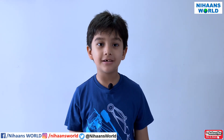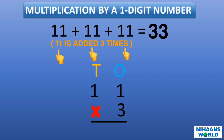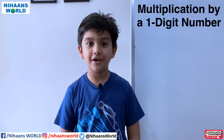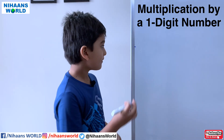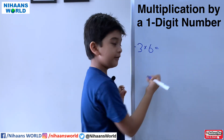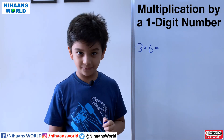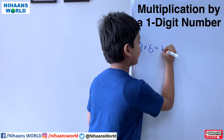Friends, now let us learn multiplication by a one-digit number. 11 is added 3 times. 1 multiplied by 3 is equal to 3, so we write 3 in the ones column. Multiply the number in the tens column by 3: 1 multiplied by 3 is equal to 3, so write 3 in the tens column. So 11 multiplied by 3 gives us 33. Let us solve another example: 3 multiplied by 6. 6 ones are 6, 6 twos are 12, 6 threes are 18. So the answer is 18.